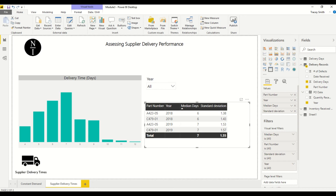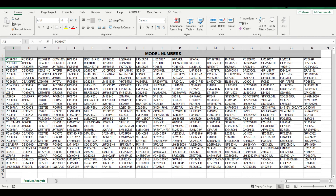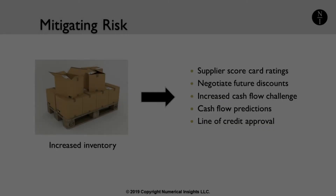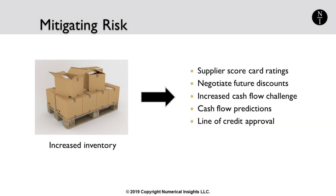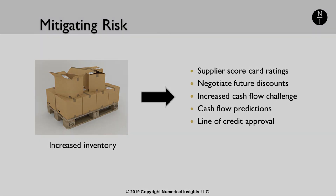There are only two part numbers in this scenario, so you can imagine the level of detail available in your data if you're a business that sells hundreds of product numbers or SKUs. An increasing trend in delivery times can be mitigated by carrying more inventory, but there is a price to pay in cash flow to mitigate the delivery risk. The results of this analysis can be used on your supplier scorecards to rate suppliers and possibly for negotiating future discounts. Finally, dates in this analysis can be used to tie to cash flow predictions, which are useful when seeking approval for a line of credit to carry you through the cash flow gap.